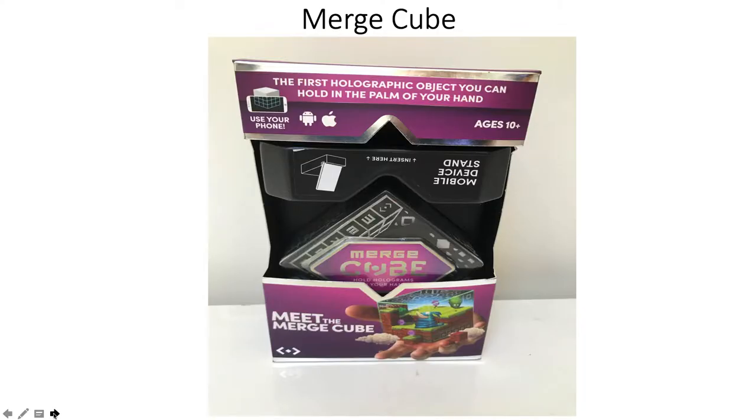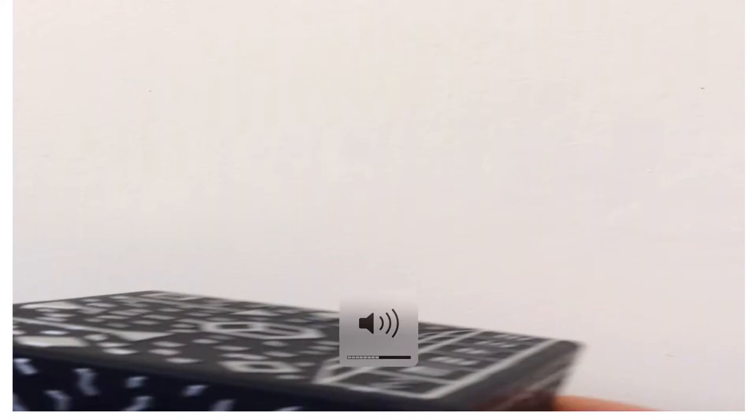The merge cube. This is a relatively recent thing for me. You can buy these from Amazon among other places. There are various pieces of software for your mobile or your tablet that you can use with these. Some of them you have to pay for. There are games. The one that I'm demonstrating here is the solar system and I think this is really good. It's even got some sound effects.